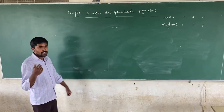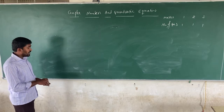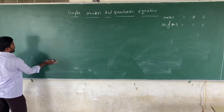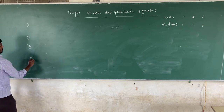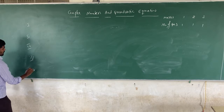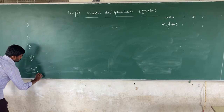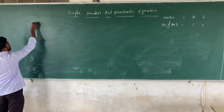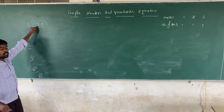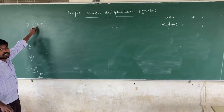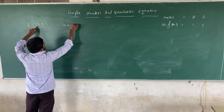Let me tell you the question paper pattern for Mathematics annual examination. In the first section, there are questions 1 to 10 — you have to answer all questions, no extra questions, and each question carries one mark. So 10 into 1 equals 10 marks. In the second section, there are 14 questions from question 11 to 24, and among them you have to answer 10 questions.